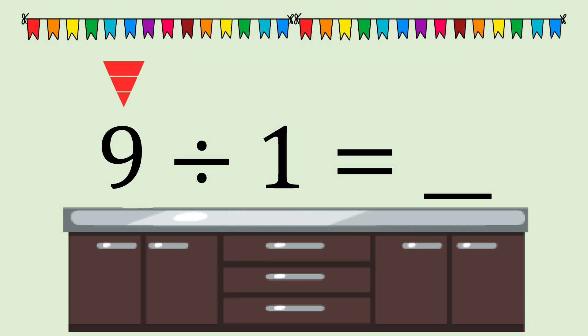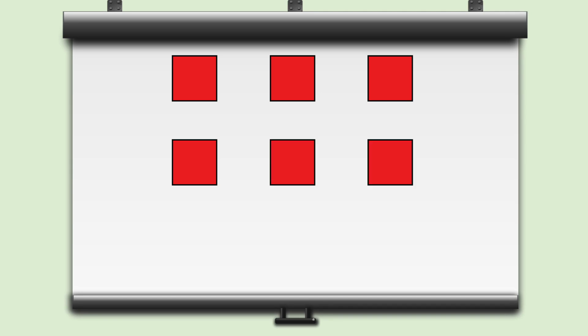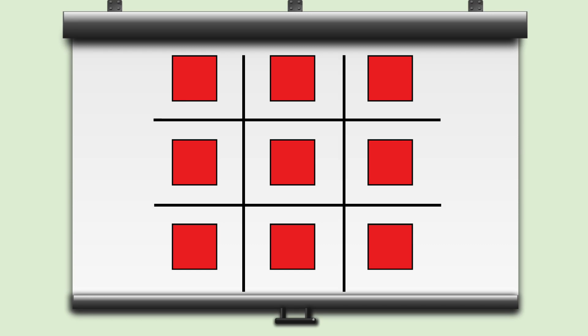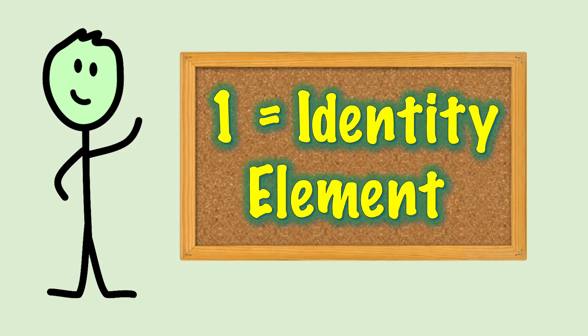Here's a division number sentence: nine divided by one equals blank. We're dividing nine into equal groups of one. Here's what we come up with: one, two, three, four, five, six, seven, eight, nine. There are nine equal groups of one. One is the identity element of division.